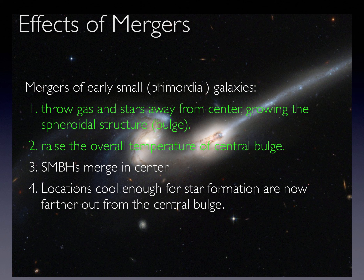Because star formation requires very cold environments, only in the cooler regions farther out from the central bulge can stars continue to form. As mergers continue, less and less of the galaxy is capable of forming stars.